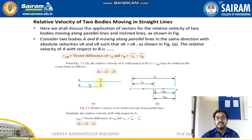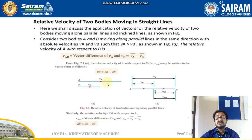Consider two bodies A and B moving along parallel lines in the same direction. As you can see, I have considered body A and body B placed on parallel lines. Body A has absolute velocity VA and body B has absolute velocity VB, with VA greater than VB, as indicated by the longer arrow for body A.